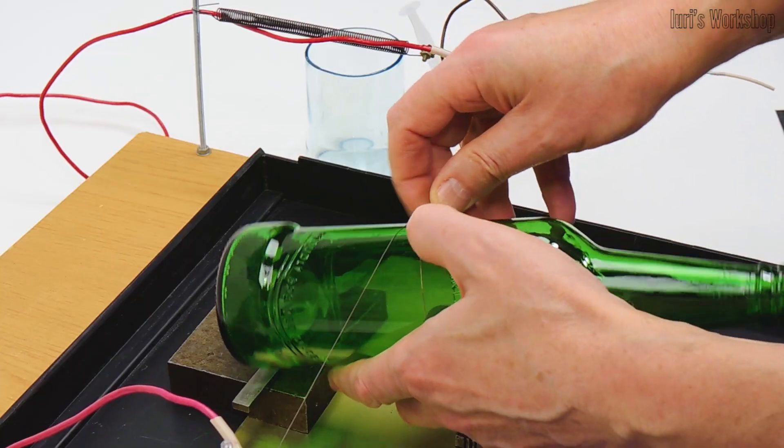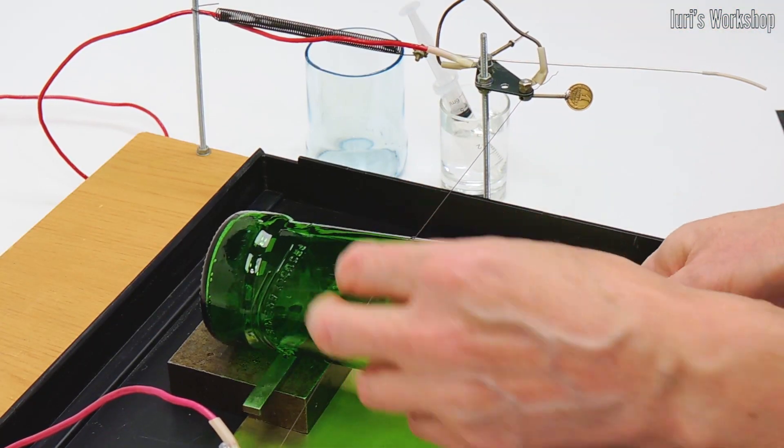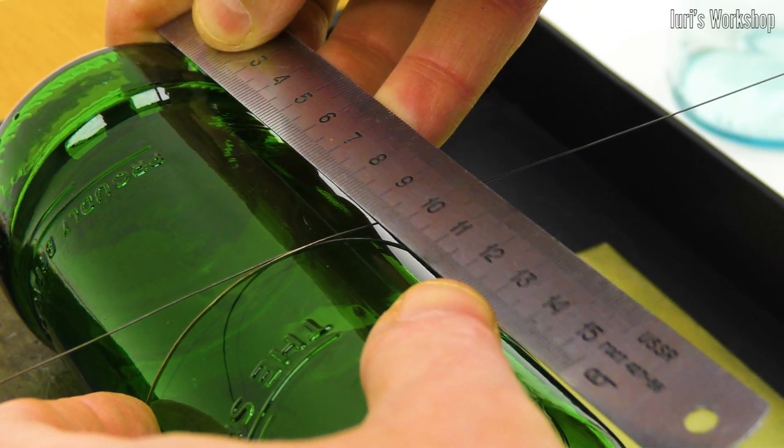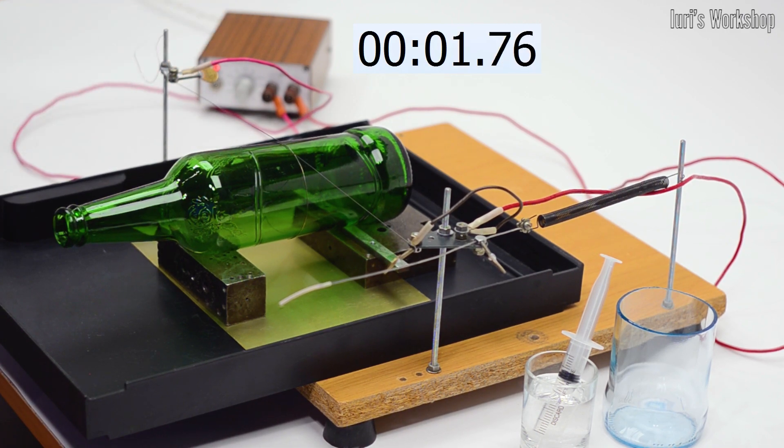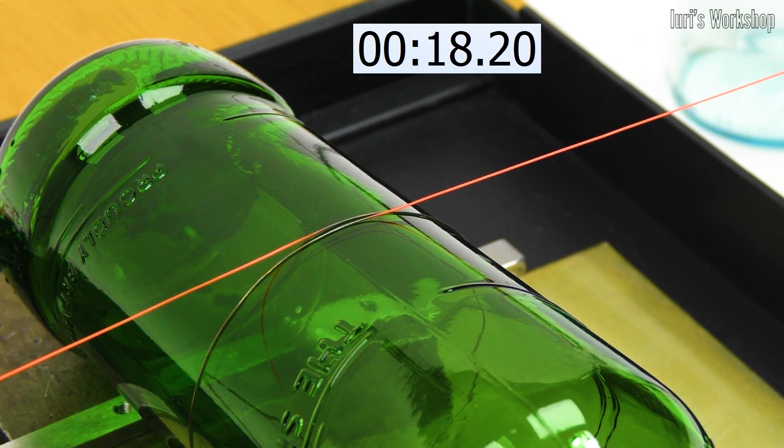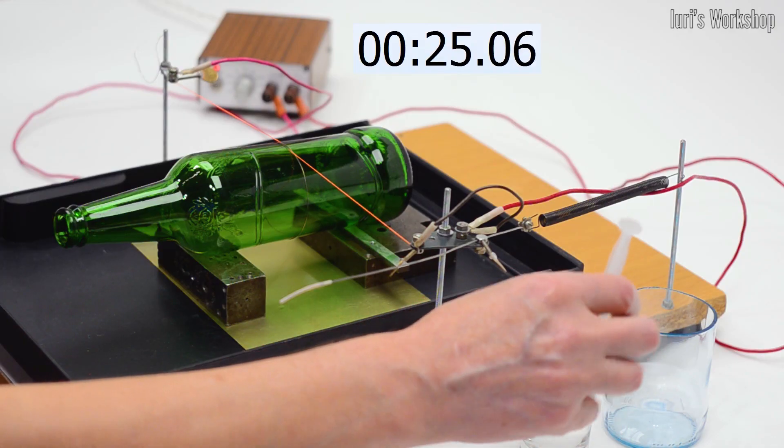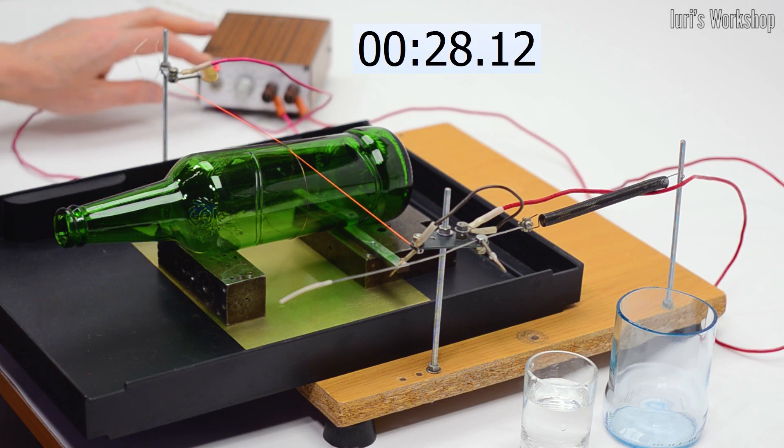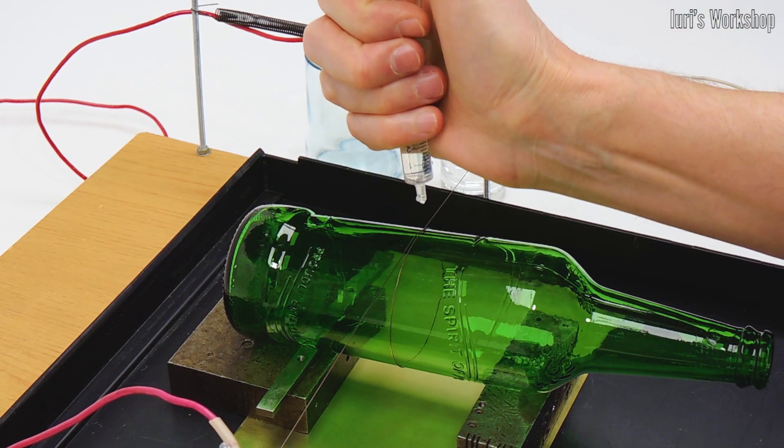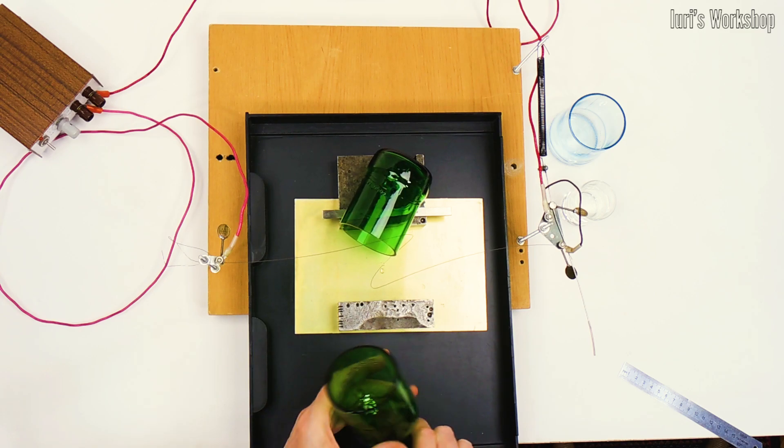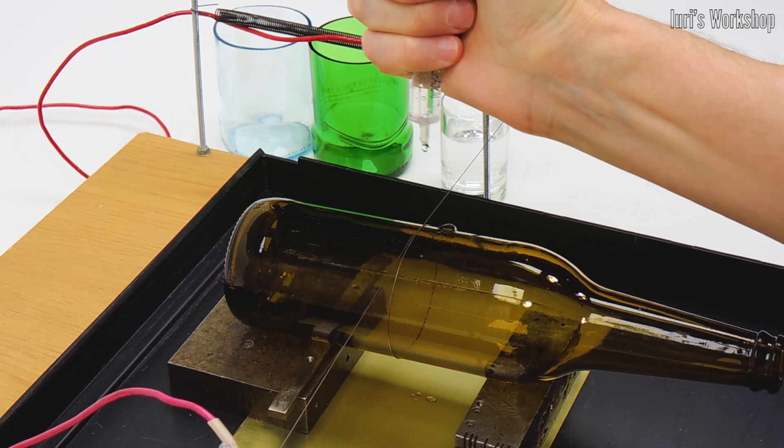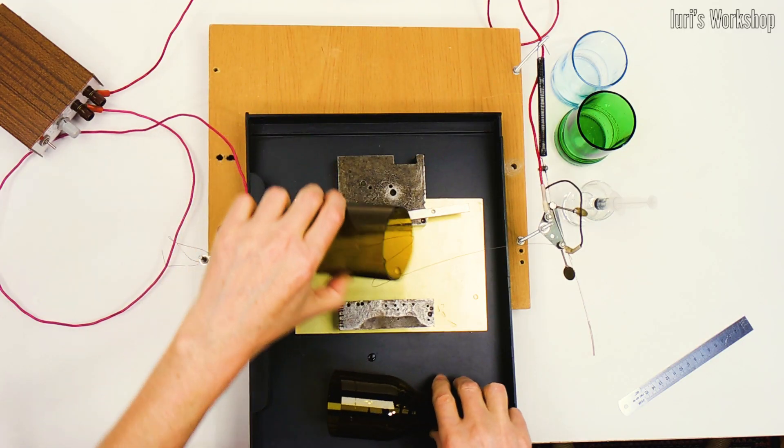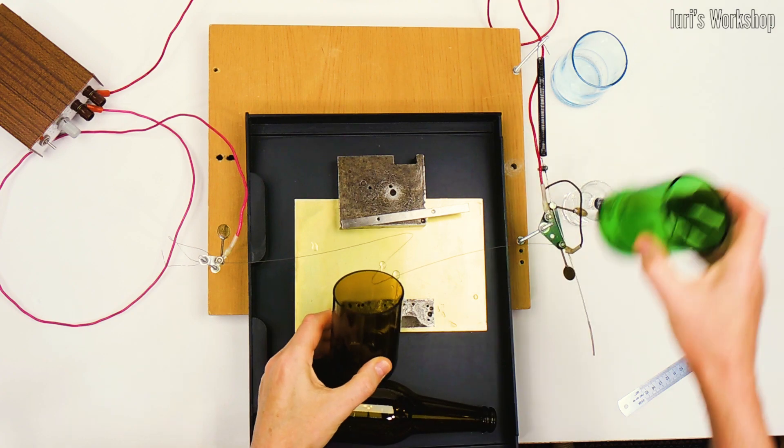With the help of a nichrome wire, you can cut glass pipes or, for example, turn bottles into glasses. The heating time of the glass is selected experimentally. It depends on the thickness of the glass and the diameter of the nichrome wire. Just one drop of water is enough to complete the process. Of course, the cut will have to be sanded to avoid cuts.